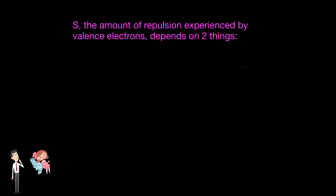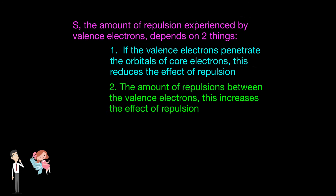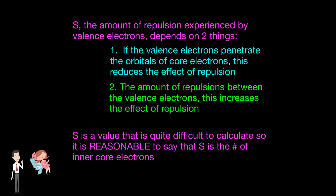S depends on two things. Number one, if the valence electron penetrates the orbital of core electrons, which reduces the effect of repulsion because the valence electrons are closer to the nucleus. Or number two, the amount of repulsions between the valence electrons, which increases the effect of repulsion because the electrons will now be further from the nucleus. S is very hard to calculate, and using the number of core electrons for the value of S is not completely accurate.